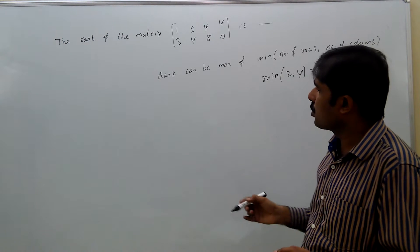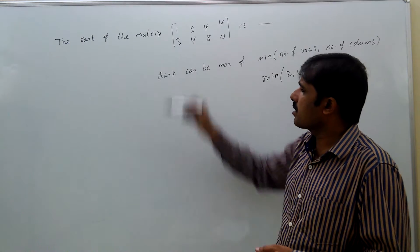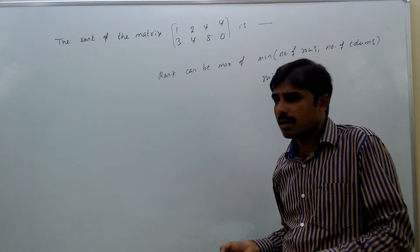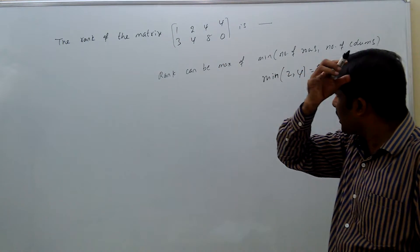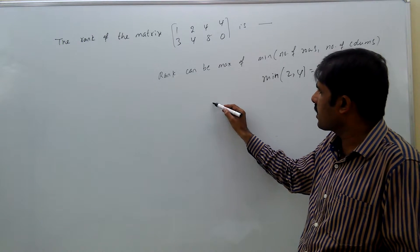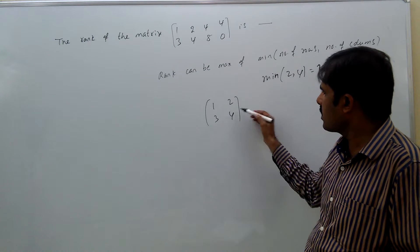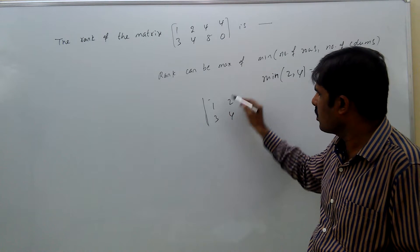Rank is 2 if at least one second order determinant is non-zero. If you see this determinant 1, 2, 3, 4, what is the determinant of this?